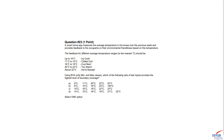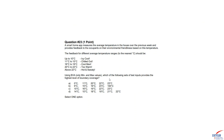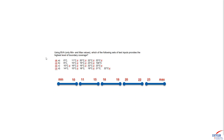We are asked: using BVA with only min and max values, which set of test inputs provides the highest level of boundary coverage? Boundary coverage for a partition is measured as the number of boundary values tested divided by the total number of identified boundary test values. We need to find which answer covers the highest number of boundary values. It's possible that none of the answers covers all eight — we just need the one that covers the most.